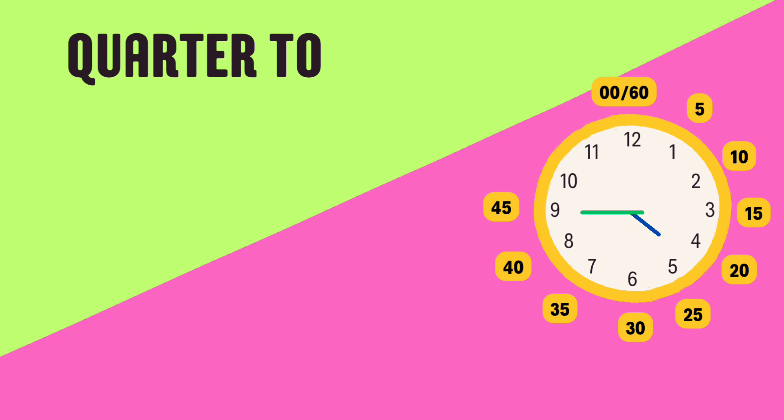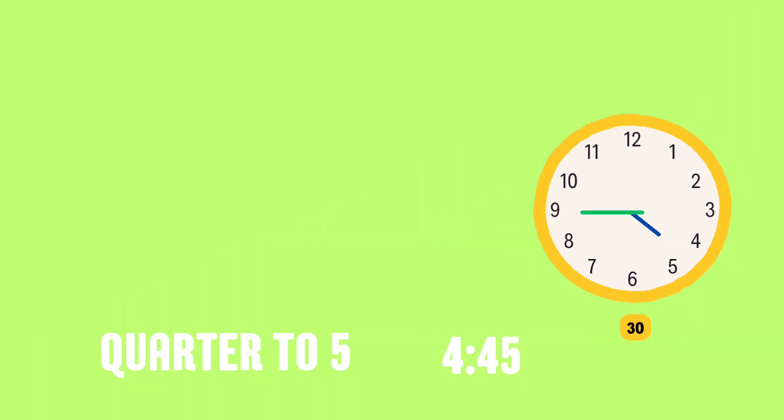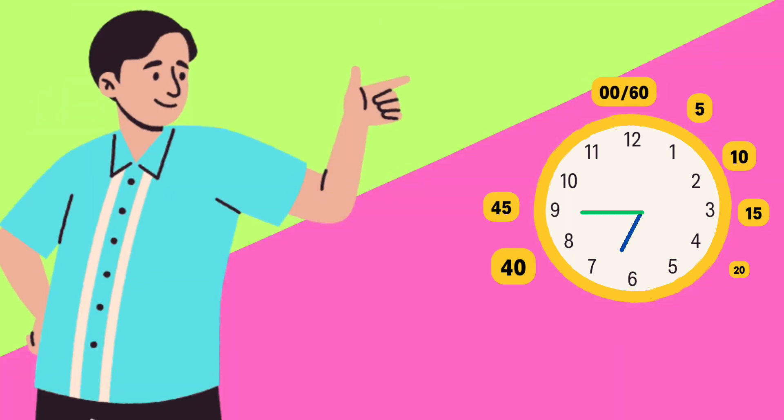Let's talk about quarter to. When the minute hand is on nine, it means fifteen minutes are left before the next hour. For example, if the hour hand is near five and the minute hand is on nine, the time is quarter to five. Quarter to five means fifteen minutes before five, which can also be written as four forty-five.